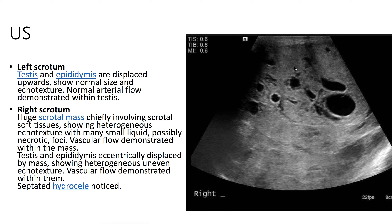On chest X-ray, we see a large oval mass in the left hemithorax. Its epicenter is in the left upper lobe, and it displaces the trachea to the right. It creates a silhouette sign with the left upper heart border.